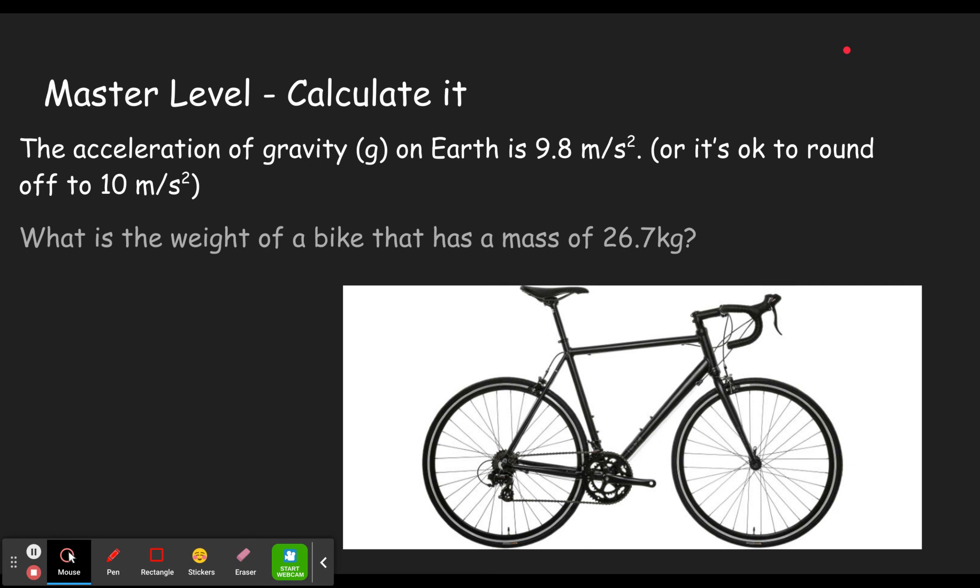You'll see we'll do step three in the next problem. So first, we have to look for the variables. We see that weight is our unknown. So we put W equals question mark. Then we see that the mass is 26.7 kilograms. So we write m equals 26.7 kilograms. And finally, we know that lowercase g is 9.8 or 10. I think I put 9.8 and then I calculated using 10. So either one, the units are meters per second squared.